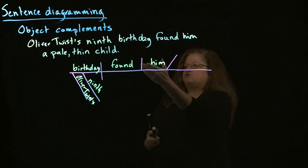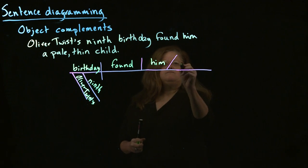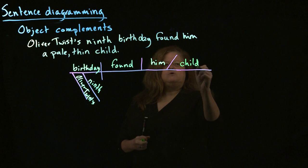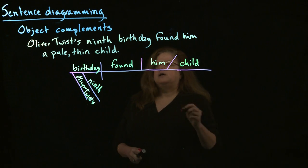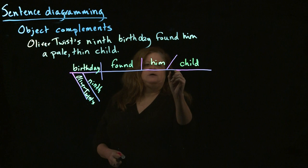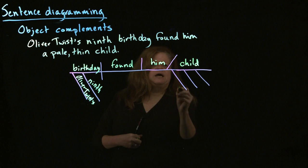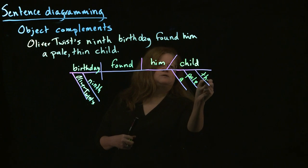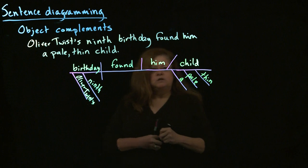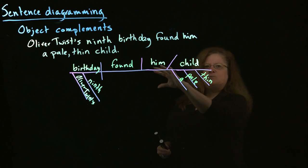Or, in this case, renaming it. It's finding him with child as the object. And we have actually three adjectives. We have a pale, thin child. So, this is renaming the object. So, it's an object complement.